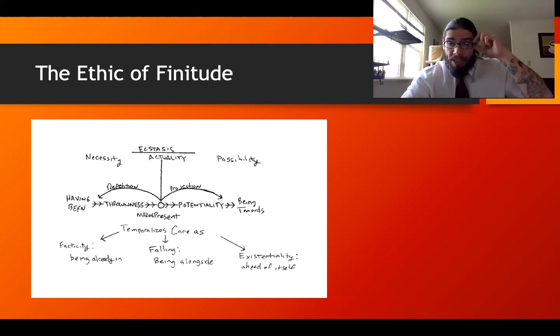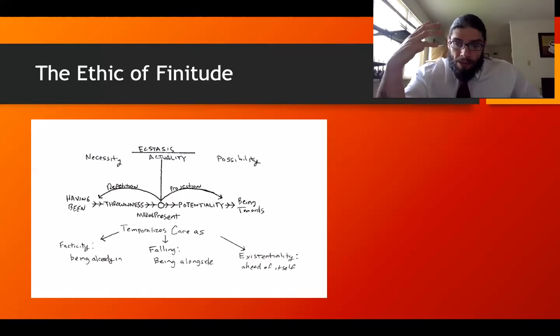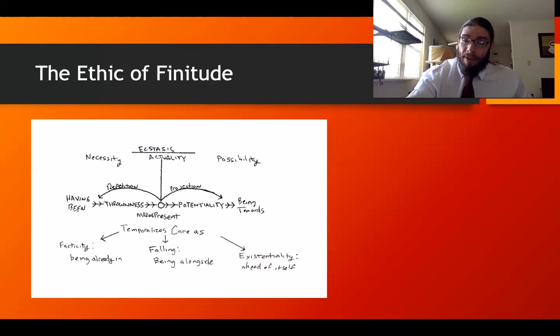While it would be beyond the scope of this discussion to explicate the concept of death any further than I already have, there is still one more important point that I need to address before moving forward. In describing the effect that death has on the they-self, the version of the self that is dissolved in the benumbing effect of Das Man, Heidegger notes a wrenching motion that pulls the self back to itself and away from the passivity of average everydayness.